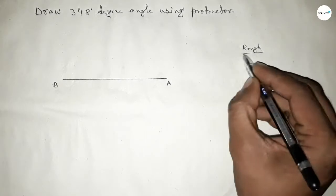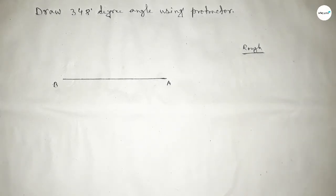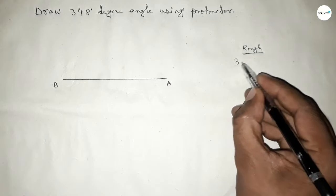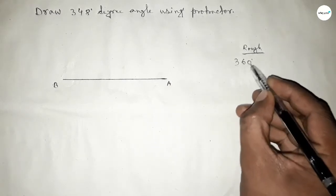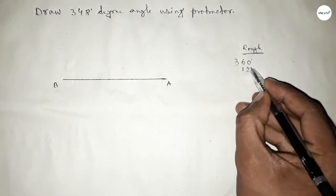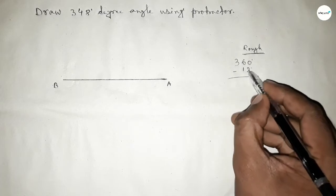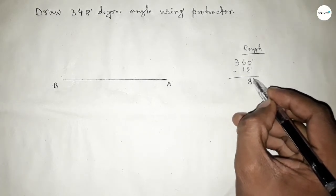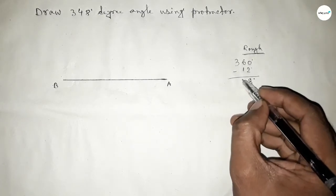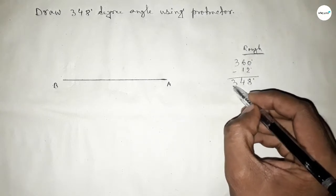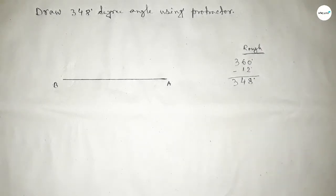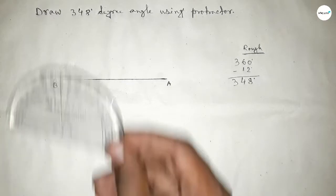If you subtract 12 degrees from 360 degrees, then we can get 348 degree angle. So subtracting 12 degrees from 360 degrees - this is 8, carry 1, so here 4 and here 3, so 348 degree angle.